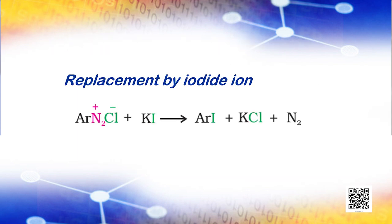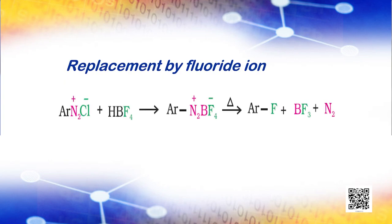Replacement by iodide ion: Iodine is not easily introduced into the benzene ring directly, but when the diazonium salt solution is treated with potassium iodide, iodobenzene is formed. Replacement by fluoride ion: When arene diazonium chloride is treated with fluoroboric acid, arene diazonium fluoroborate is precipitated, which on heating decomposes to yield aryl fluoride.